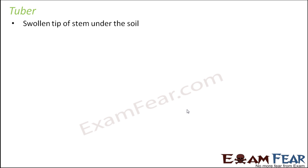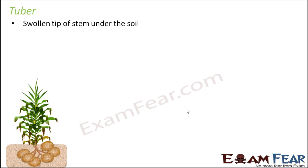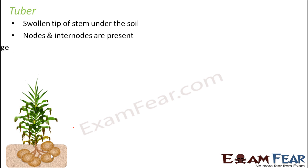The next type of underground stem is tuber. A tuber is a swollen tip of a stem under the soil — the stem is slender but the tip is swollen. The best example is a potato. In potato, the edible part is the swollen tuber, so the stem is the edible part. Nodes and internodes are present, and it helps in food storage. Buds are also present.